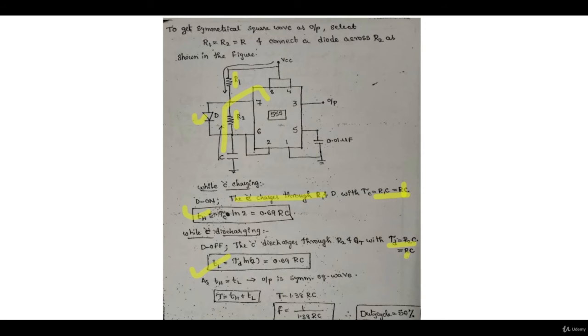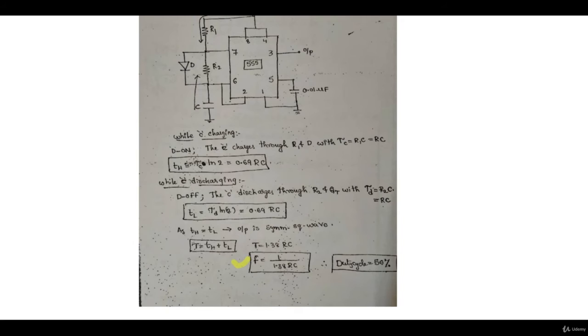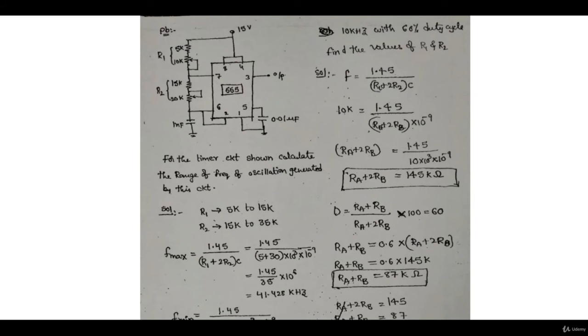With equal resistors and the diode configuration, you get a 50% duty cycle. The total time period is 1.38·R·C, the duty cycle is 50%, and the frequency is 1/(1.38·R·C). This shows how we can manipulate the circuit to achieve a symmetrical output.